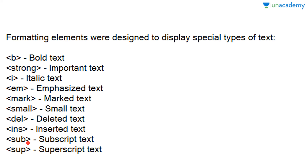Subscript text using the SUB tag — subscript text is a text lower than the normal text, like log base e of 10. To display that we write: log, then open sub tag, write e, close the sub tag, then write 10. So it displays as log with e slightly lower, then 10. Superscript text is text slightly above the normal text, like x raised to the power 2. We write: x, then open sup tag, write 2, close the sup tag, and it displays as x raised to power 2.